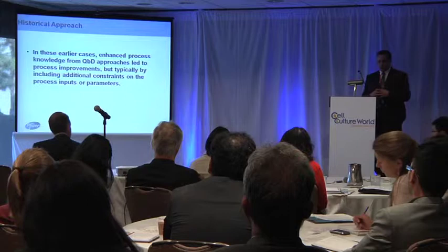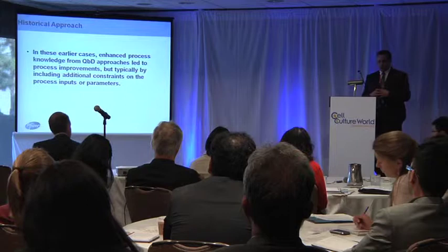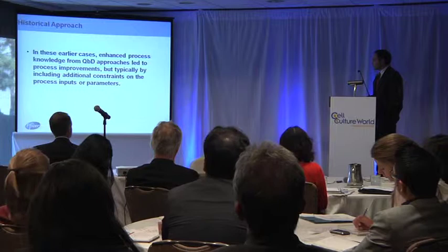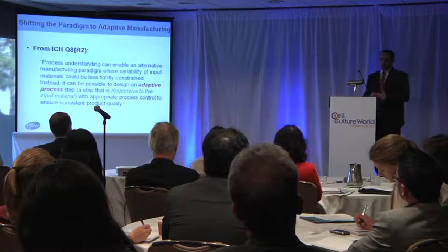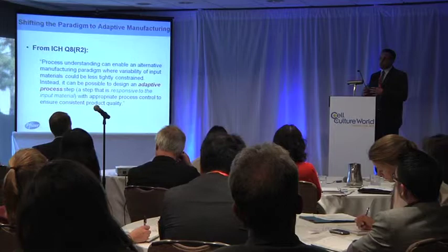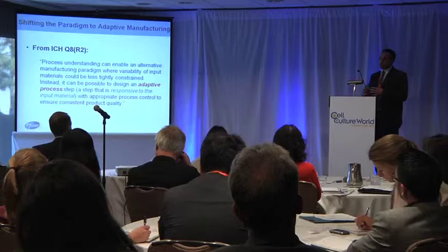Rather than taking that approach of always constraining our manufacturing processes, what we wanted to do was envision a different world where we take our knowledge from QBD and PAT and really develop adaptive processing steps. This is direct language from the guidance document, speaking to the fact that we can enable an alternative manufacturing process — where rather than always controlling our input parameters tighter and tighter, instead we create an adaptive process where we're better monitoring and better able to implement controls to ensure product consistency. With that, I'd like to jump into a particular case study.